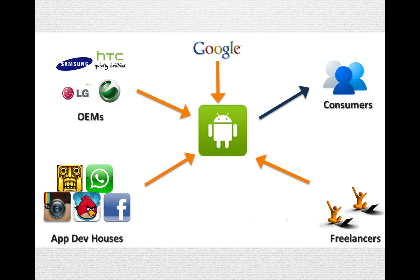Here is a simplified look at Google's business network or ecosystem for the Android operating system. There are different stakeholders in this network: the handset or tablet manufacturers, the app developers, freelancers who might enhance the open source code of Android, and consumers like us who may use the OS on our handsets or tablets. Clearly there are differences in the interactions that Google has with its various partners.